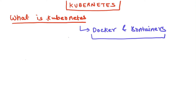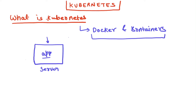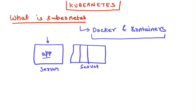Earlier, whenever anyone needed to deploy an application onto infrastructure, organizations used to buy physical hardware — a physical server — and then deploy an app on it. This was a very unoptimized, costly approach where one app runs on one physical server. Then the concept of VMs came into picture, where onto the same physical server you can divide it into multiple VMs.